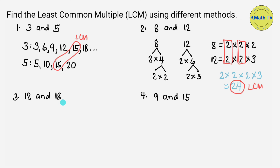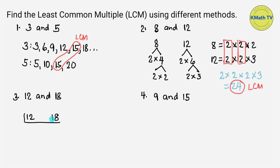This time, let's find the LCM of 12 and 18 using continuous division. In continuous division, we divide the given numbers by their common prime factor. What number can divide both 12 and 18? We can divide them by 2. 12 divided by 2 equals 6, and 18 divided by 2 equals 9.